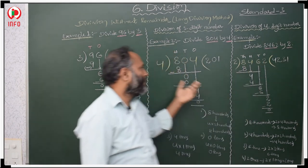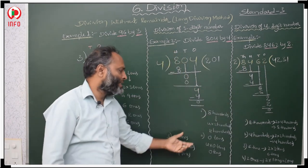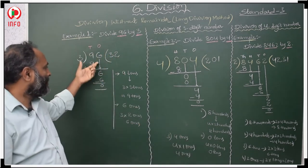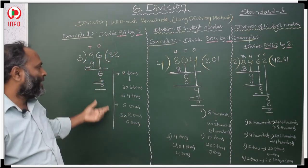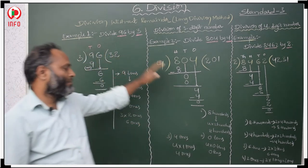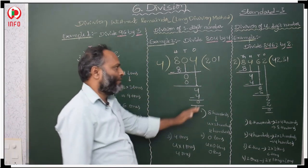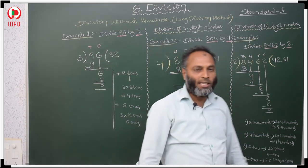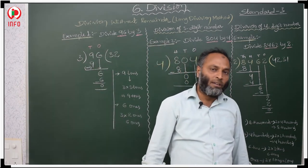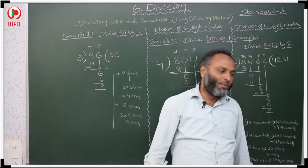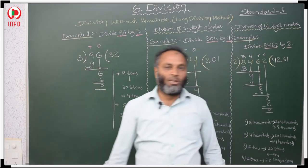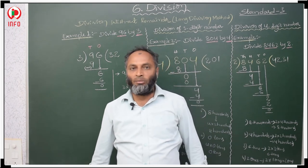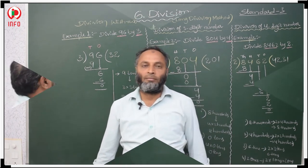When a 4-digit number is given, we do like this. When a 3-digit number is given, we do like this. When a 2-digit number is given, we do like this. All these are without remainder — without 0 as a remainder.